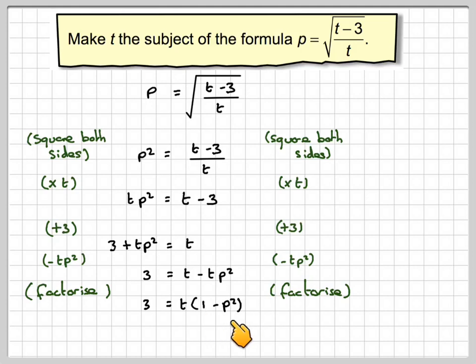And then t is now multiplied by 1 minus p squared. So we're going to divide both sides by 1 minus p squared. We're going to have 3 over 1 minus p squared is equal to t.